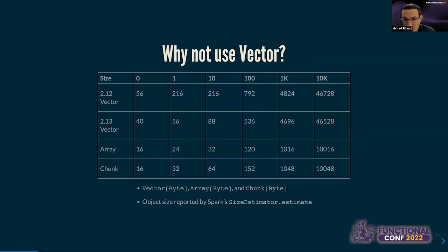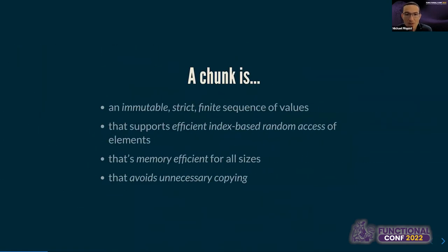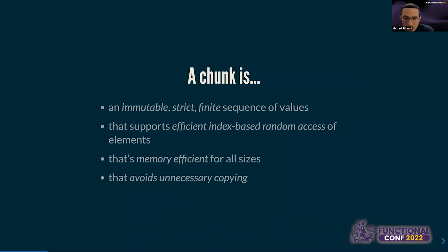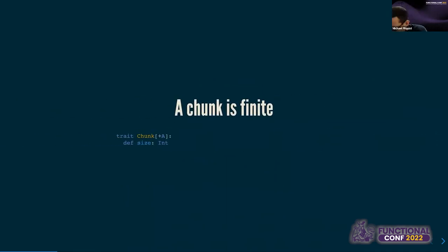Moving arrays around would be the most efficient option, but we'd have to deal with the mutability of arrays — and this is a functional programming conference. So chunk is our answer: chunk gives us the efficiency of arrays while being immutable. You can think of it as an immutable array. We can update the definition: a chunk is an immutable, strict, finite sequence that supports efficient lookup, is memory efficient for all sizes, and avoids copying as much as possible when interfacing with IO boundaries.